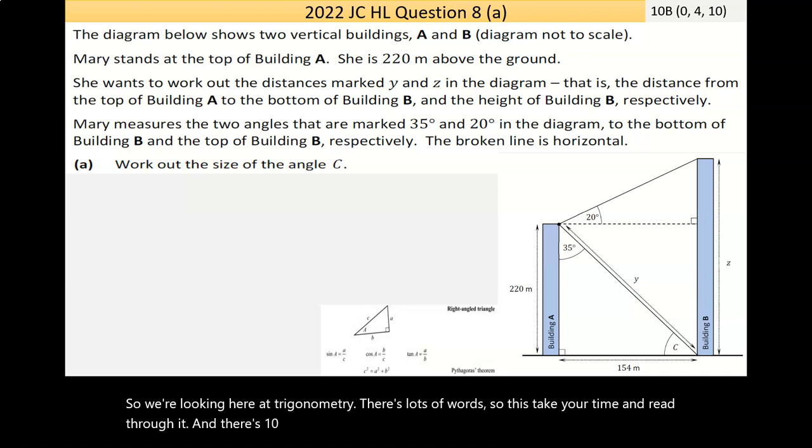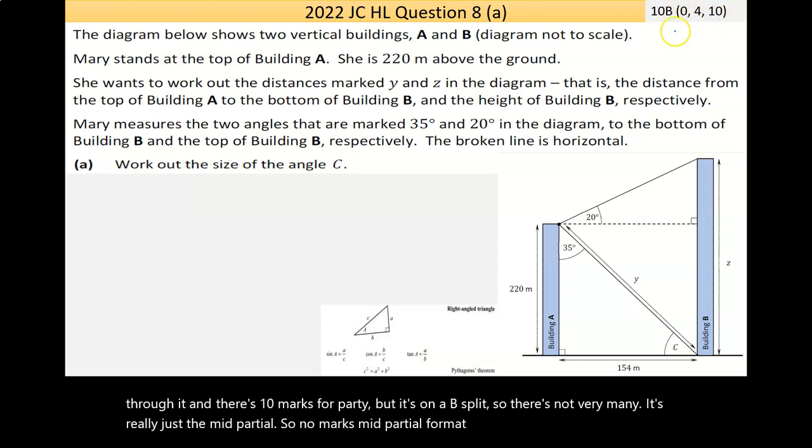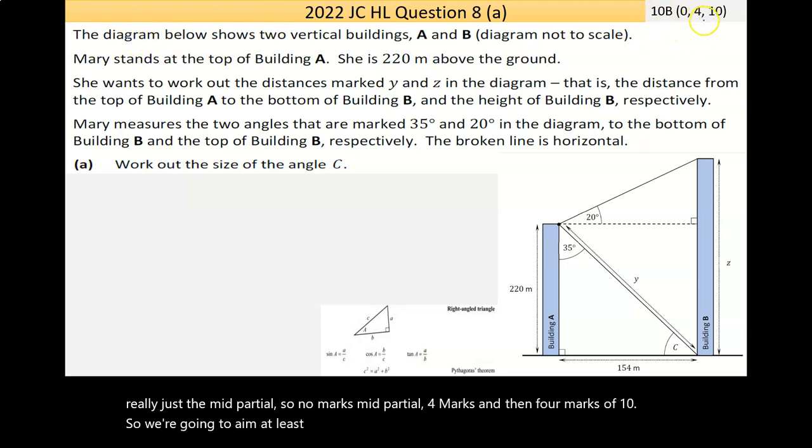There's 10 marks for part A, but it's on a B split, so there's not very many. It's really just the mid-partial, so no marks, mid-partial 4 marks, and then 4 marks of 10. So, we're going to aim at least to get the 4 off the bat.